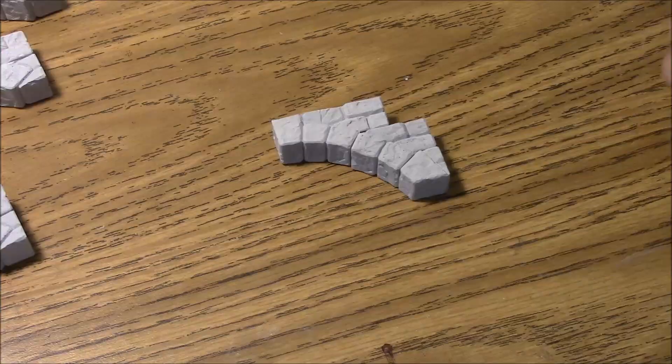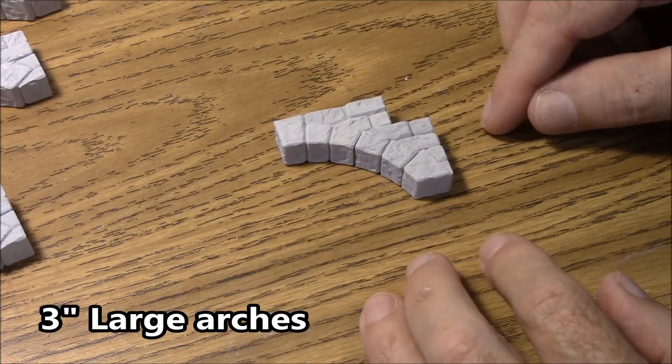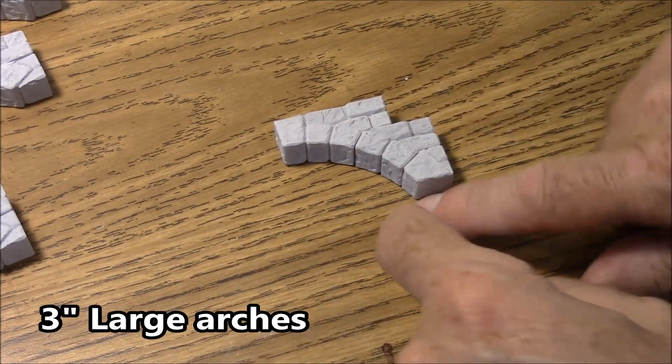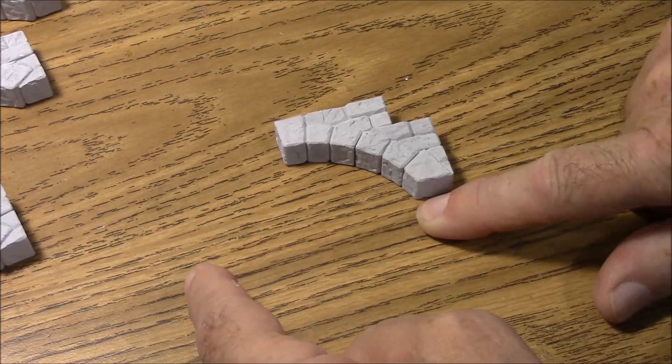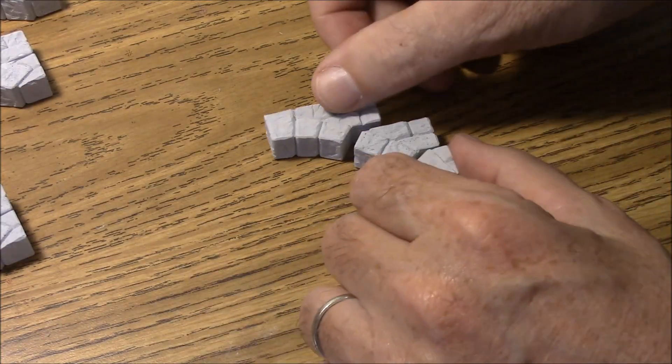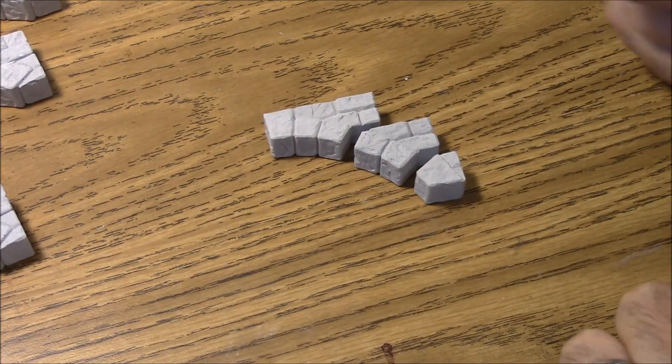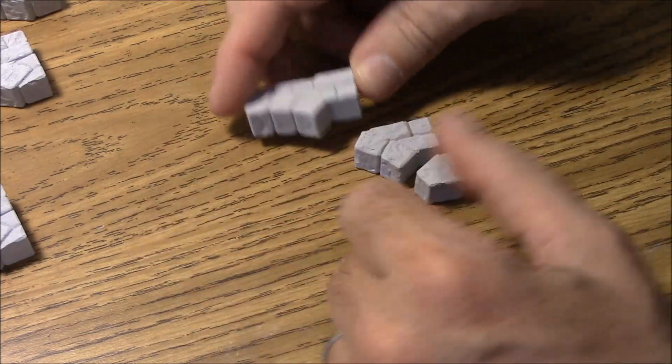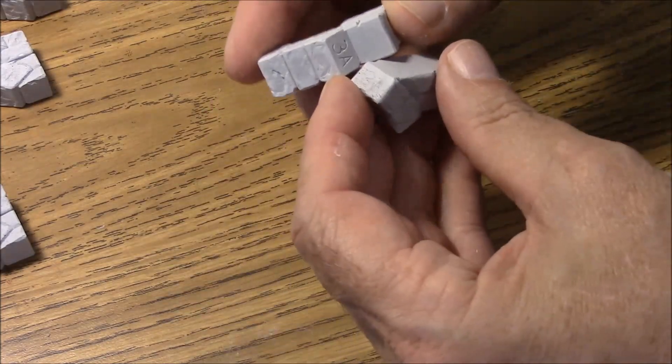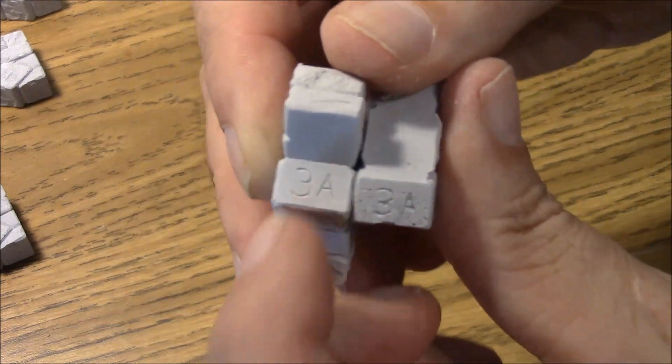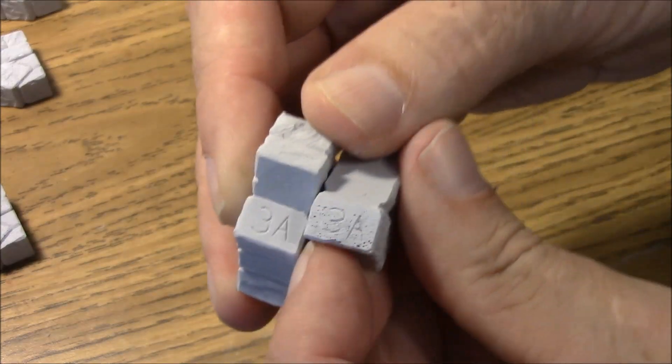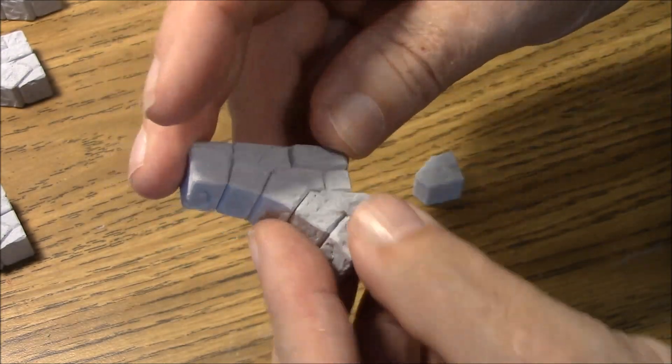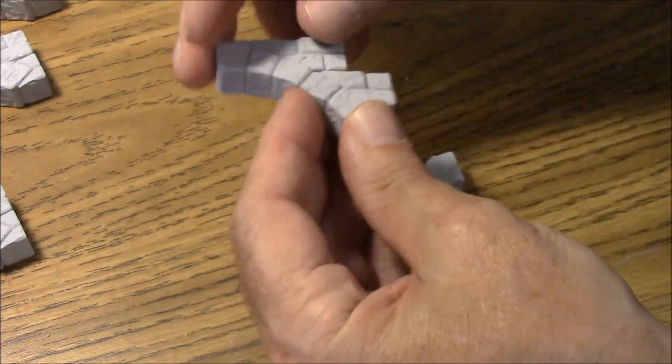The next arches we're going to glue together are the three-inch arches. They measure three inches from inside to inside. Once you have a complete arch—these are once again made of three pieces—this is also labeled. On the inside you'll notice it is labeled 3A and 3A. Those two will go together smooth against smooth to form this part of the arch.